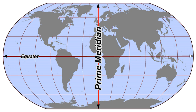North–South: Northern Hemisphere – the half that lies north of the equator; Southern Hemisphere – the half that lies south of the equator.